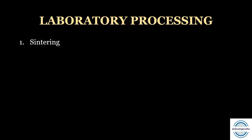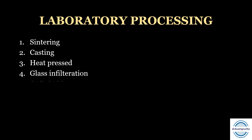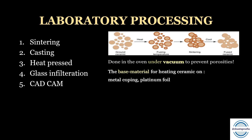The next classification is based on laboratory processing. There are five types: sintering, casting, heat pressed, glass infiltration, and CAD CAM. Sintering is a method of making objects from powder by heating the material below its melting point until the particles adhere and fuse to each other. Sintering is done in an oven under vacuum. We need a base material for heating — either a metal coping, a platinum foil, or hydrothermal glass.